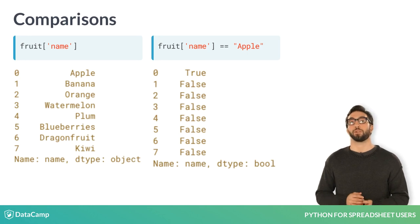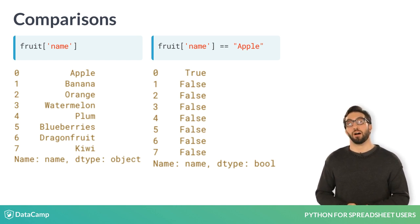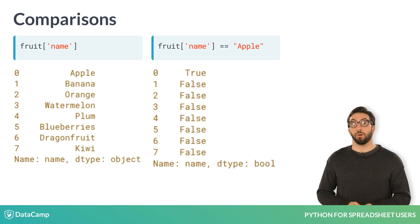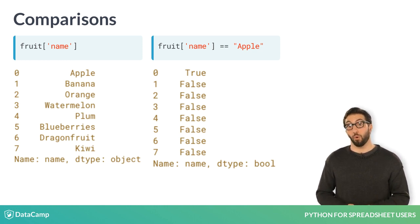For example, on the left is our name column, and on the right are logical, or boolean, true-false values that correspond to where the name column is equal to apple. Here, only the first entry is true, since name is equal to apple only in the first row. Always remember that Python is case sensitive, so that capital A in apple is very important.